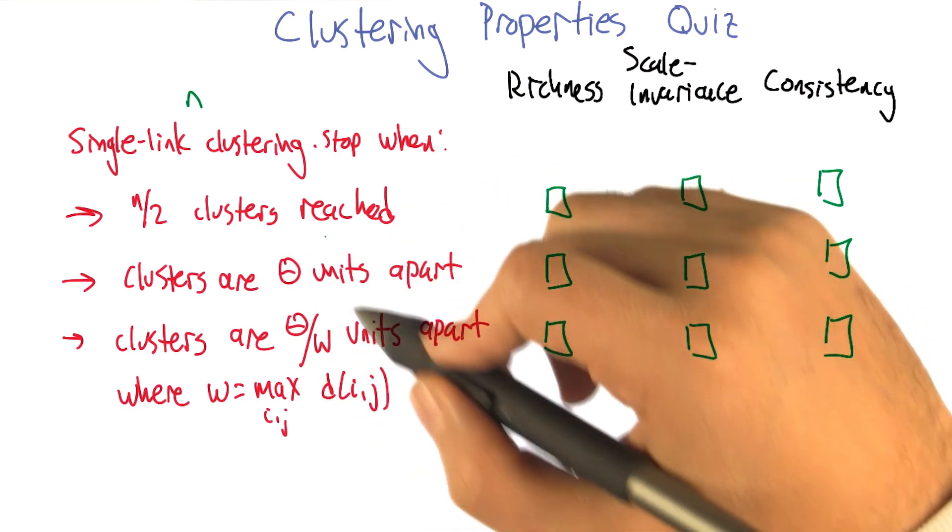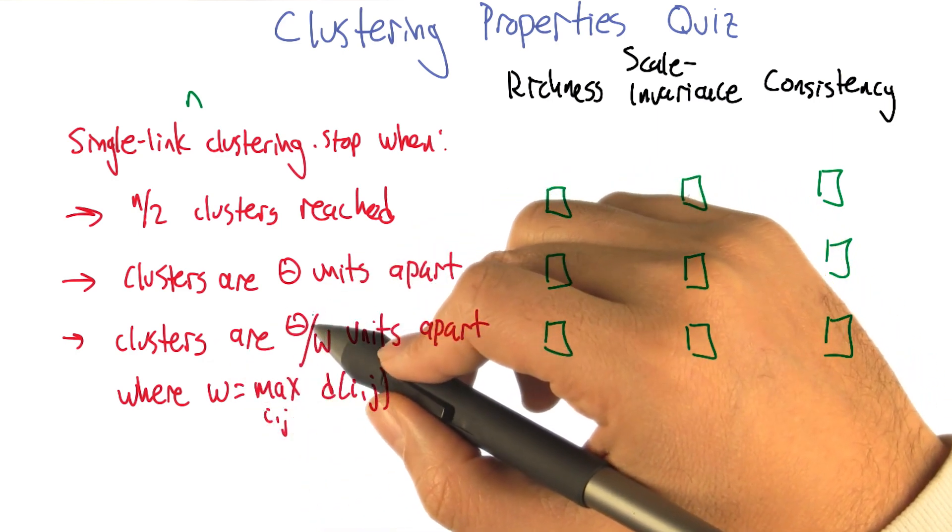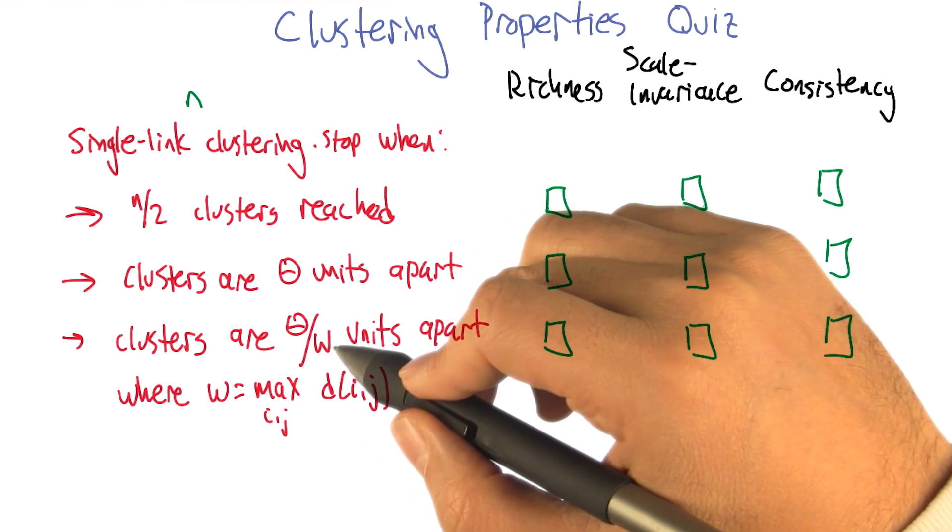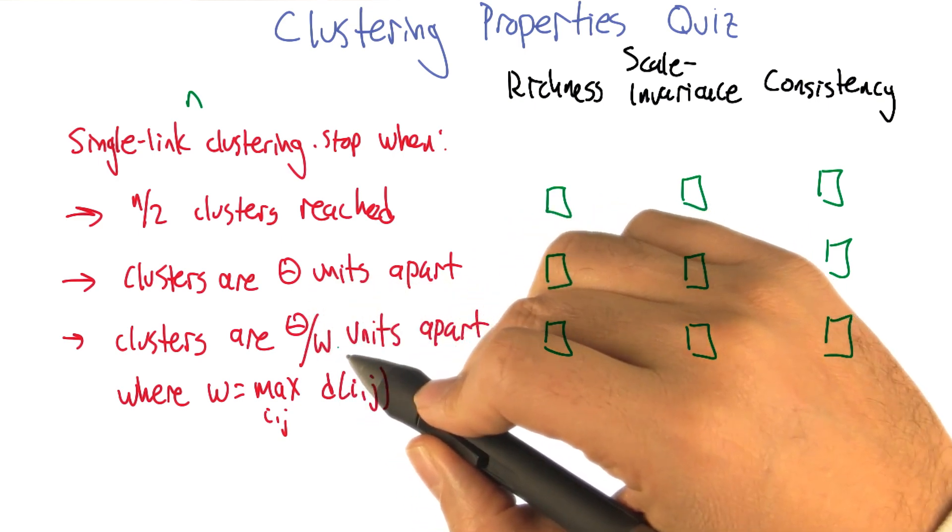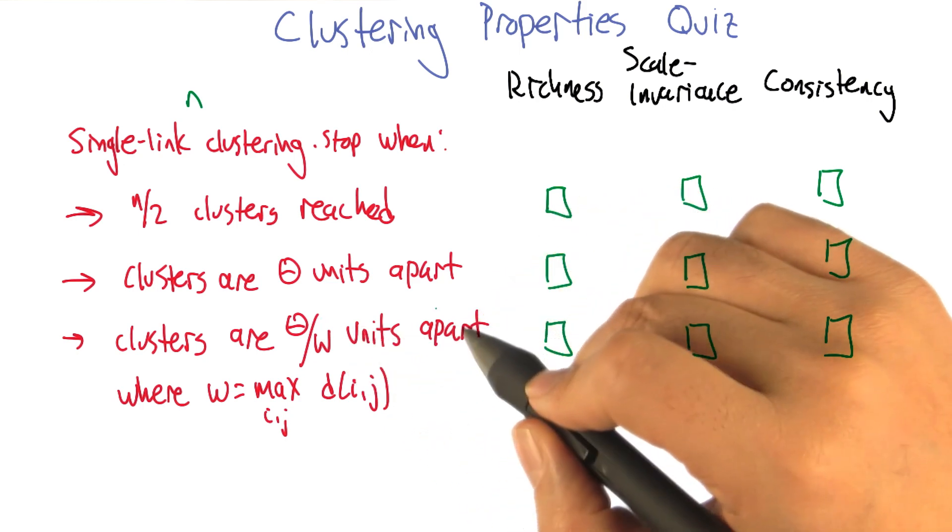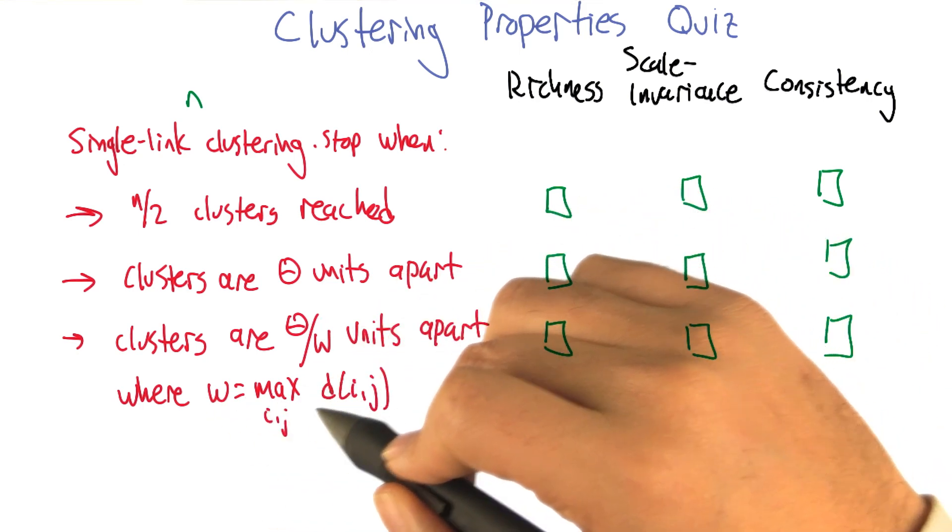And the last one is very similar. We're going to keep doing clusters until we'd have to merge clusters that are farther than theta over omega units apart. And omega, in this case, is going to be defined to be the largest pairwise distance over the entire data set. That's an omega? Yes.